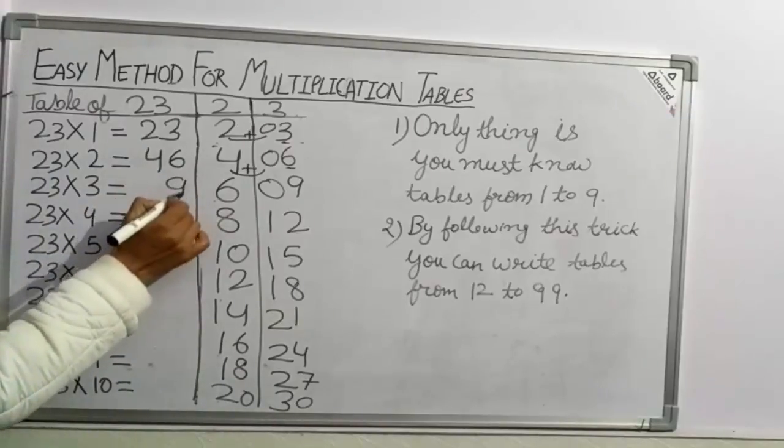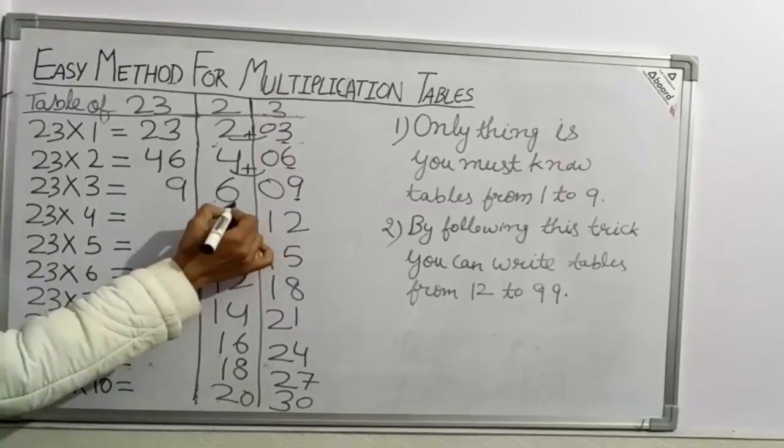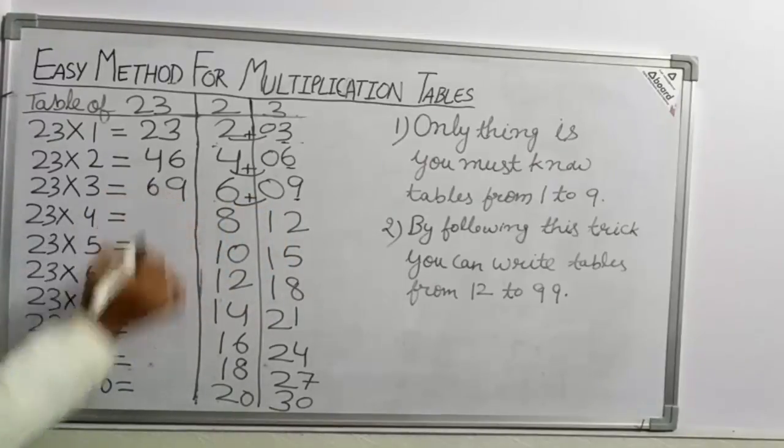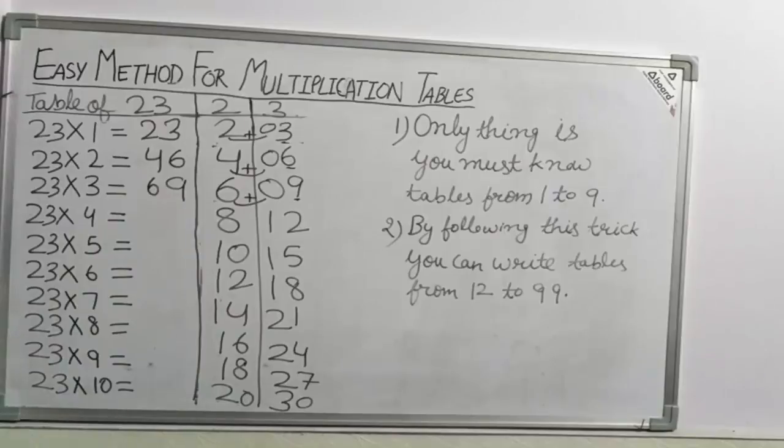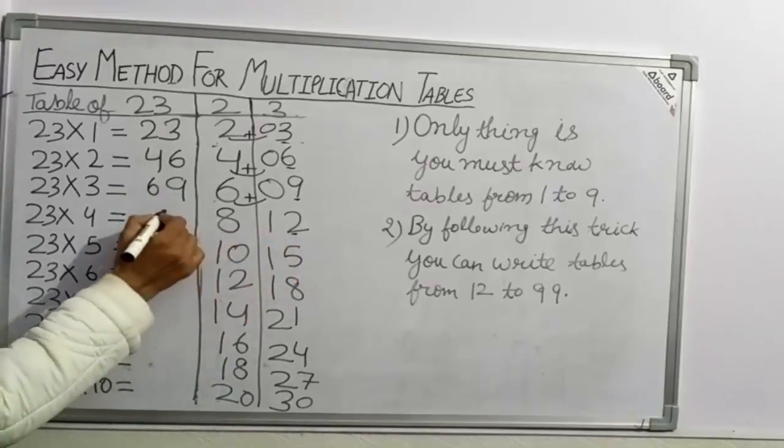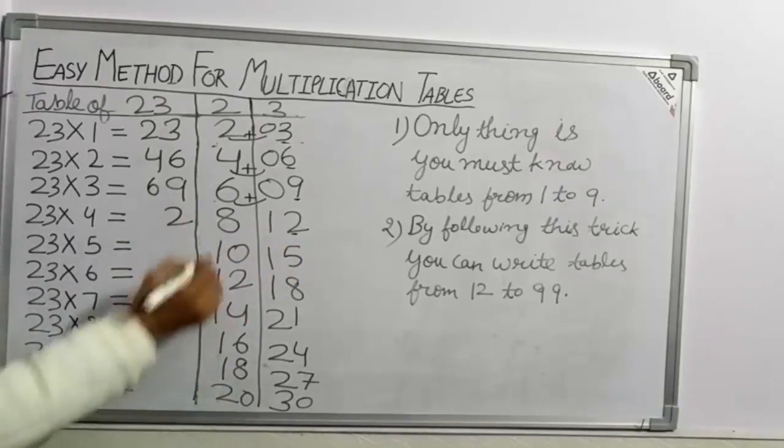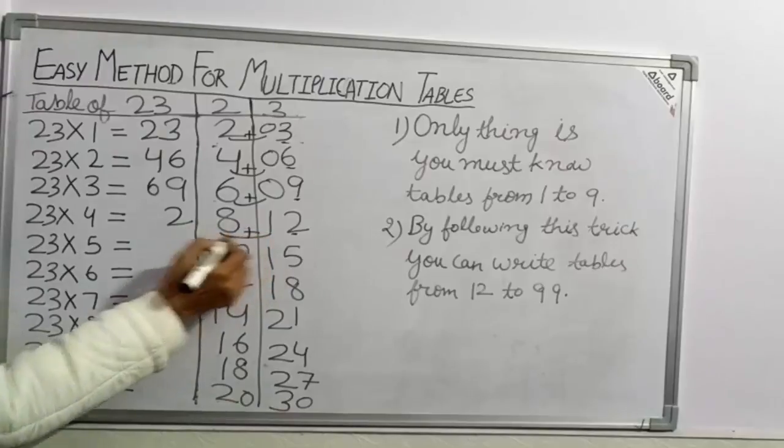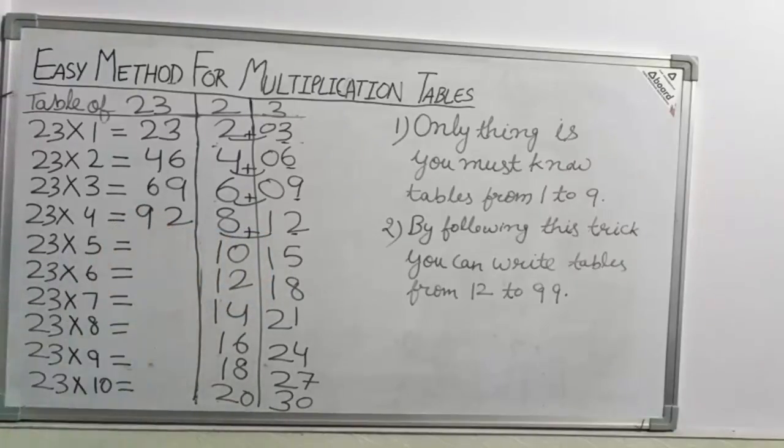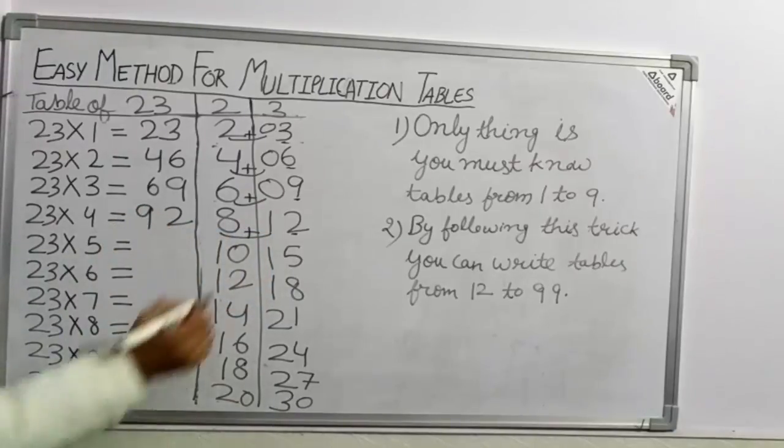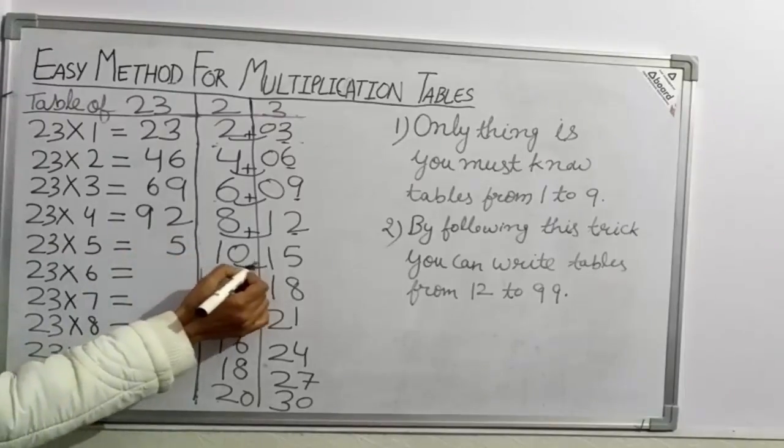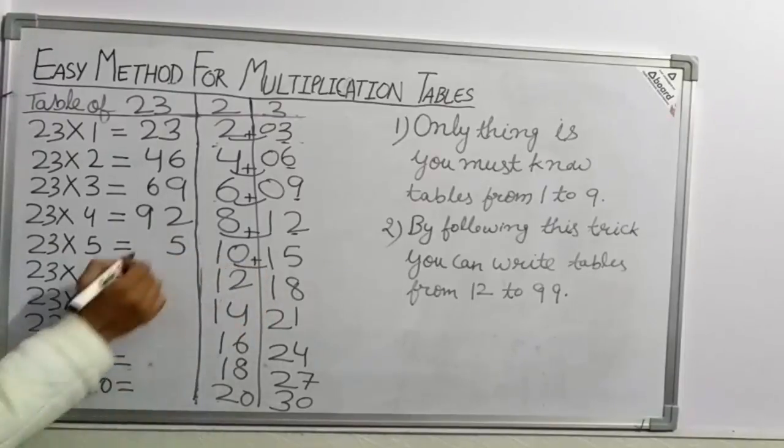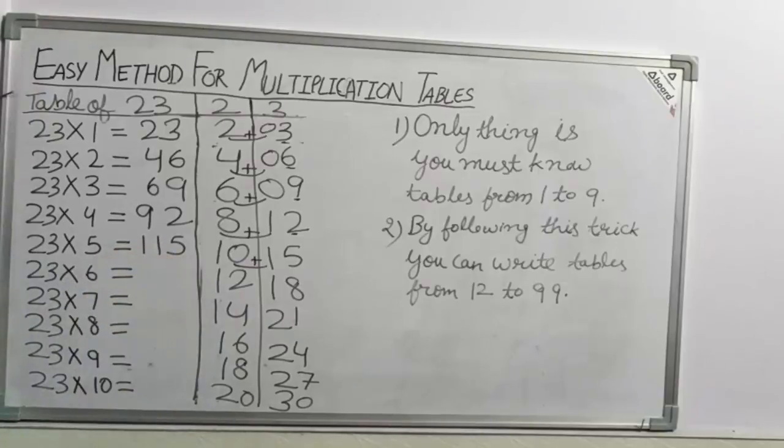Now take 9 as it is. 6 plus 0. 6. 23×3 = 69. Now take 2, unit place of table 3 as it is. 8 plus 1 is 9. 23×4 = 92. Now take 5 as it is. 10 plus 1 is 11. 23×5 = 115.